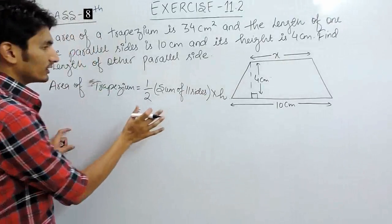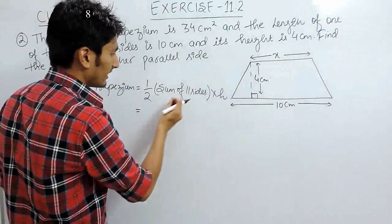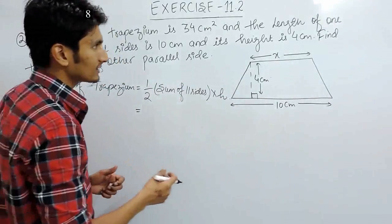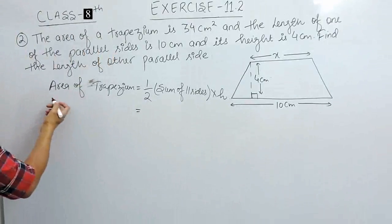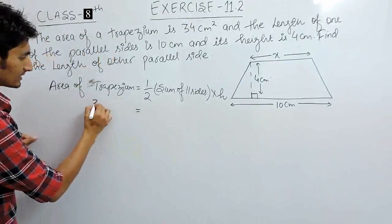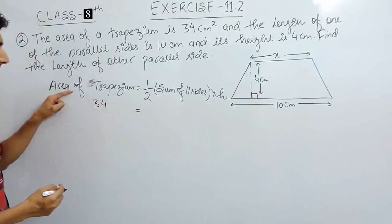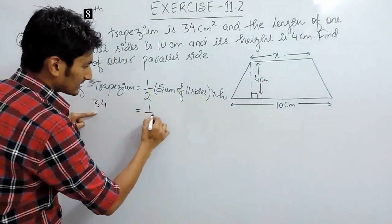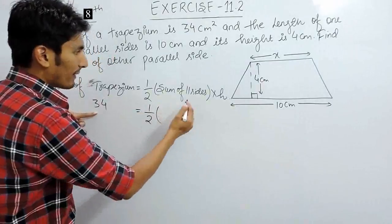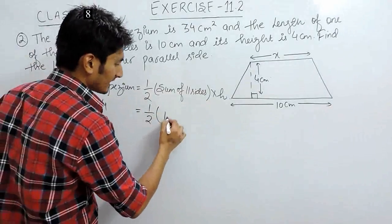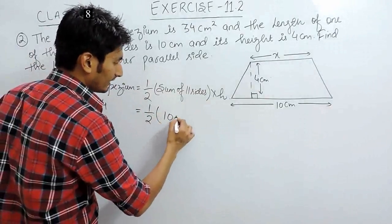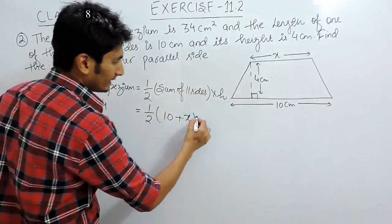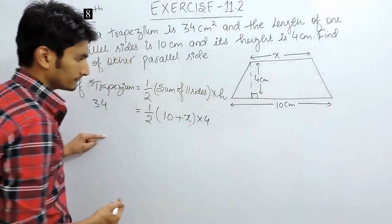In this question, you just have to put the values into this formula and you will be able to find your answer. The area of the trapezium is given as 34, so in place of area we write 34. On the right-hand side, half the sum of the parallel sides — one side is 10 and the other side we suppose as x cm — multiplied by the height, which is 4.